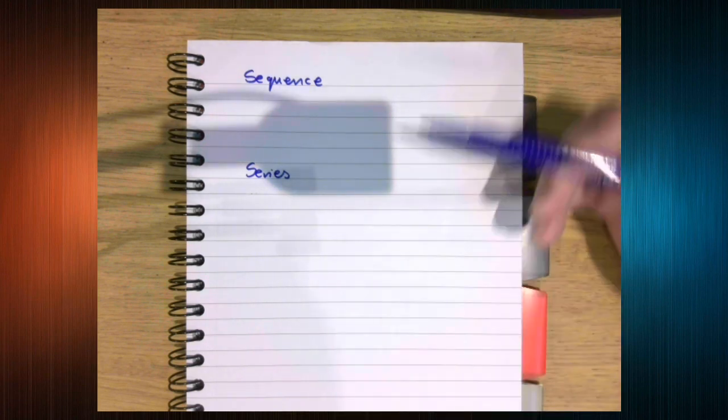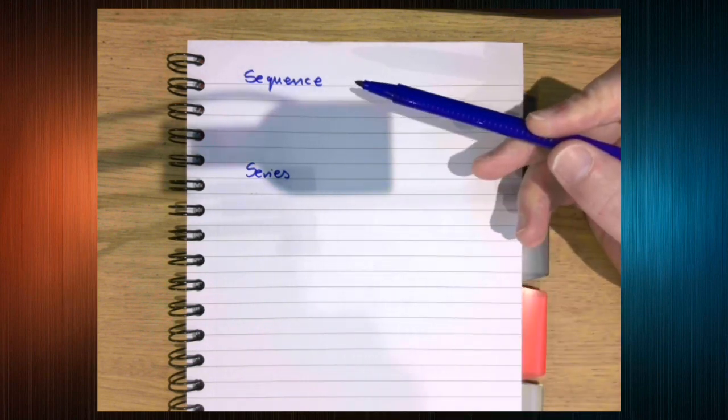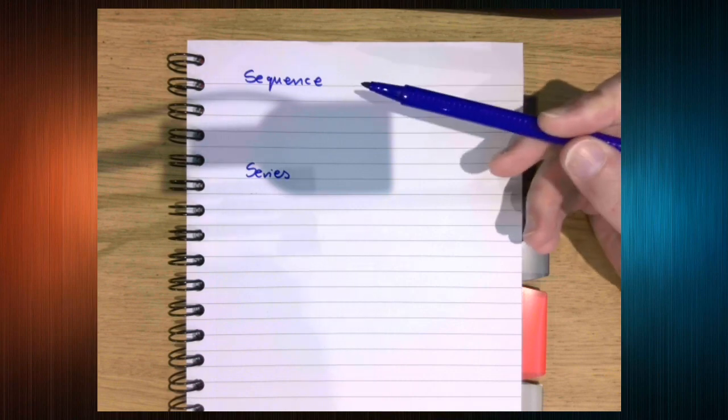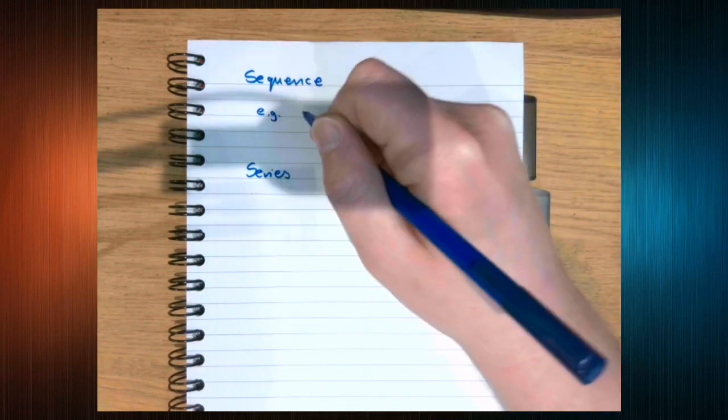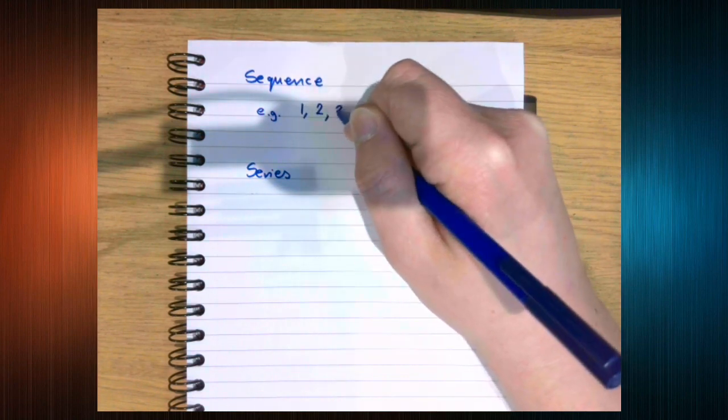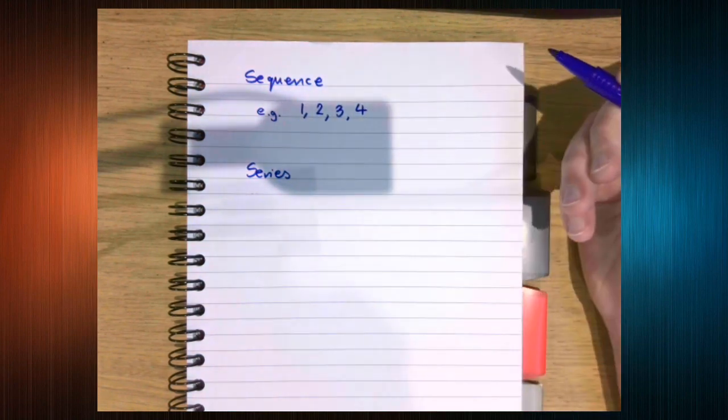So a sequence is a list of numbers that follows a pattern. So for instance, that is a sequence.